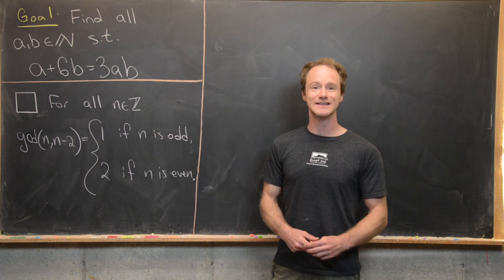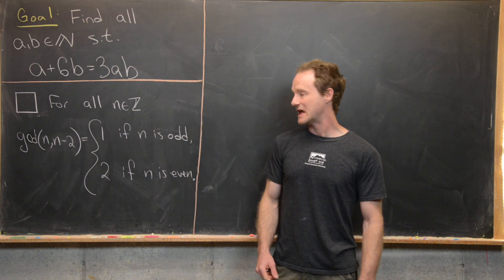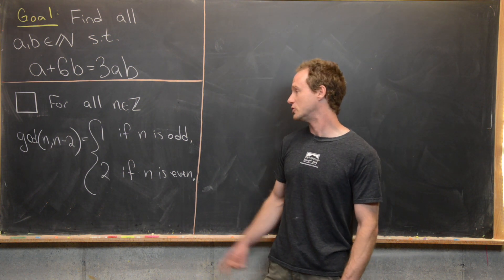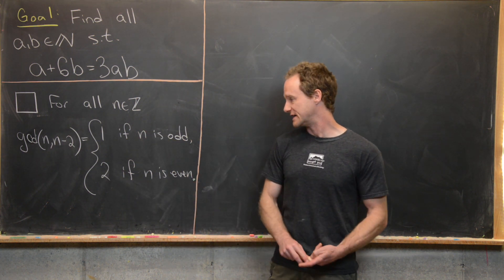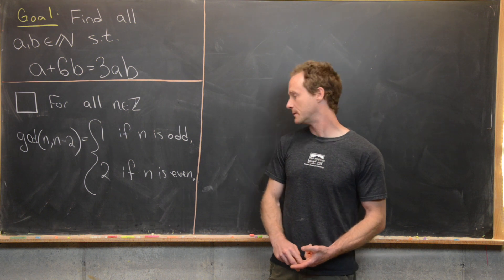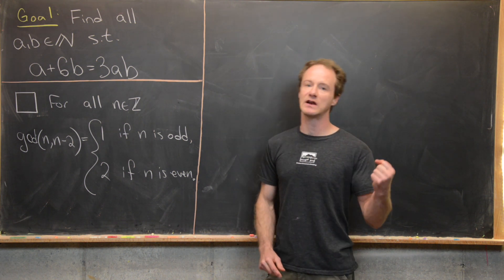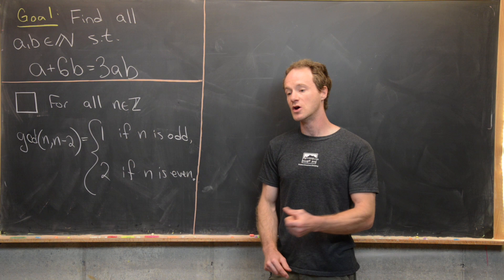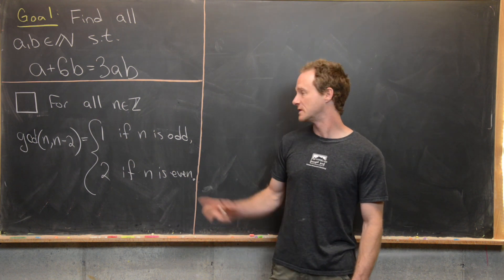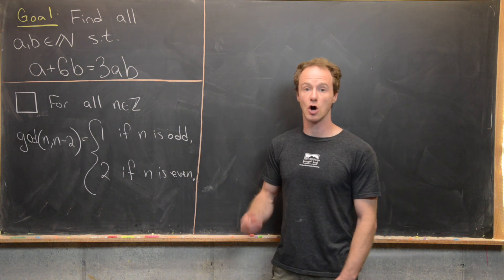For all integers n, the GCD of n and n minus 2 is 1 if n is odd, and it's 2 if n is even. Obviously if n is even, then n minus 2 is even, which means that 2 must divide both of those. But if they're odd, then these things are coprime.